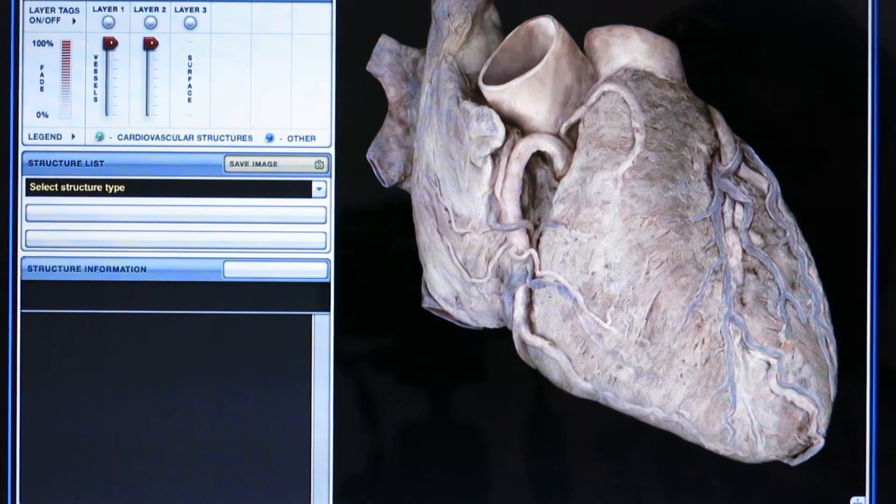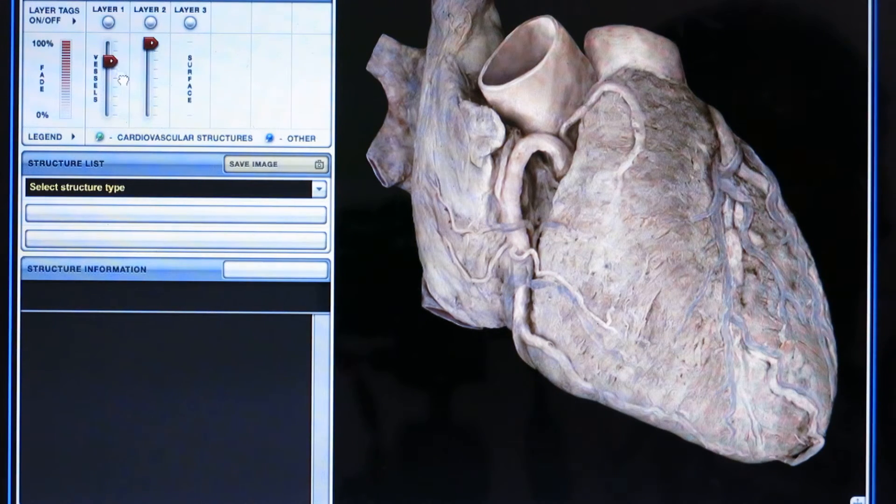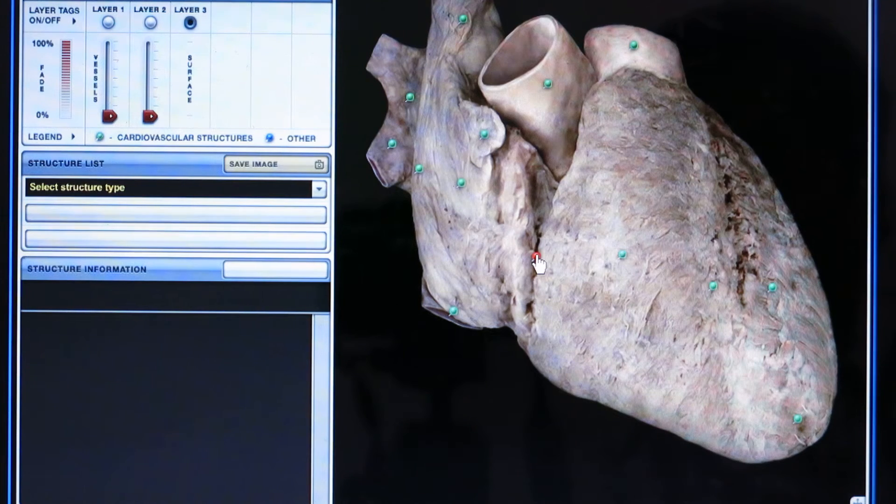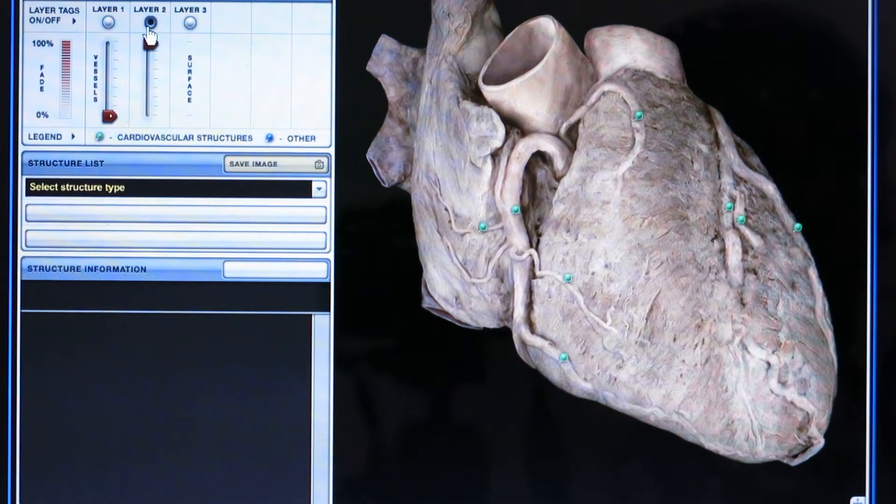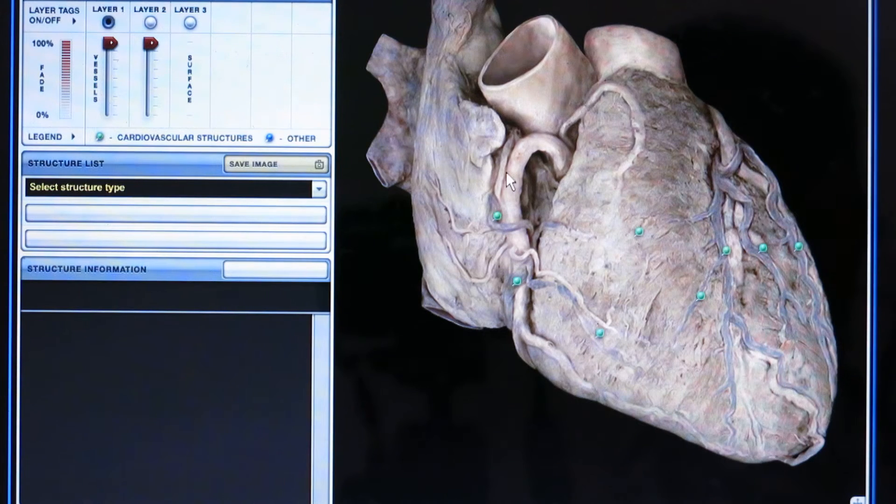So this picture what you're seeing here is showing blood supply towards the heart. You can see different blood vessels here, small arteries and veins connecting.